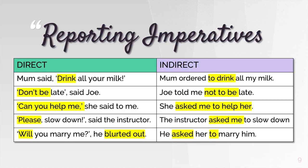What about reporting imperatives? For example, Mom said, 'Drink all your milk.' In the indirect sentence: 'Mom ordered to drink all my milk.' Pay attention — I am reporting, so I use the pronoun 'my' instead of 'your.' Remember not to use a question mark, just a period, and add 'to' before the main verb. For 'Don't be late, said Joe' — since it's a negative imperative, I would say 'Joe told me not to be late.' Use 'not' plus the infinitive of the main verb.